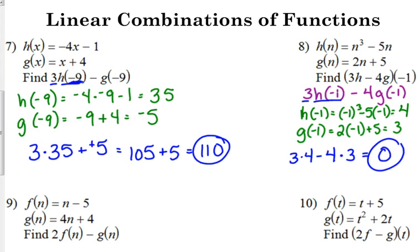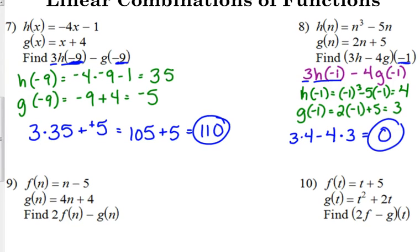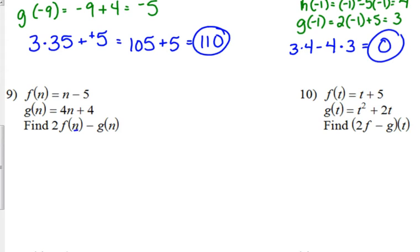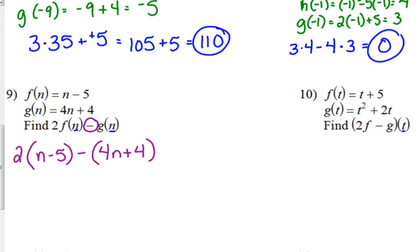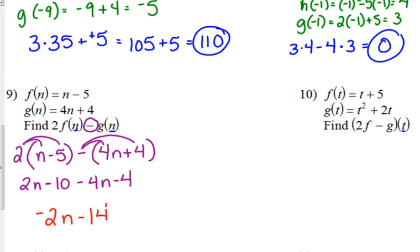Whenever you see numbers with your functions, your answer should be a number. But when we look at something like numbers 9 and 10 and we don't have numbers — just variables — our answer is going to have variables in it. For number 9, we multiply our entire f function by 2 and subtract. Remember: if you see that subtraction sign, put the function in parentheses. So we've got 2 times n minus 5, minus parentheses 4n plus 4. Distribute the 2: 2n minus 10. Distribute that negative: minus 4n minus 4. Combine like terms: 2n minus 4n is negative 2n, negative 10 minus 4 is negative 14.